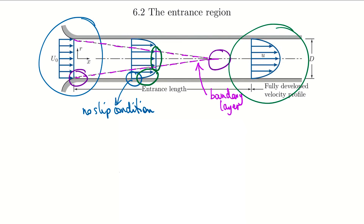Eventually all the boundary layers from the wall overlap at the center, producing what's called the fully developed velocity profile — a completely viscous flow profile that looks like a parabola. We'll derive exactly what that velocity profile looks like mathematically later. The region where the boundary layer is growing is called the entrance length, denoted L_E. After the boundary layers meet at the centerline, the velocity profile shape no longer changes — that's 'fully developed.' For most pipes, the entrance region is relatively small, so the vast majority of pipe flow is in the fully developed region.